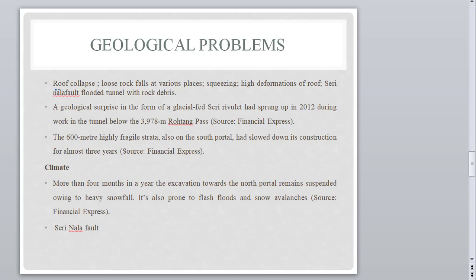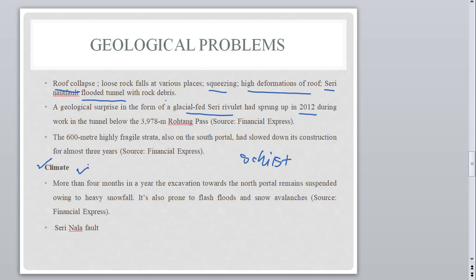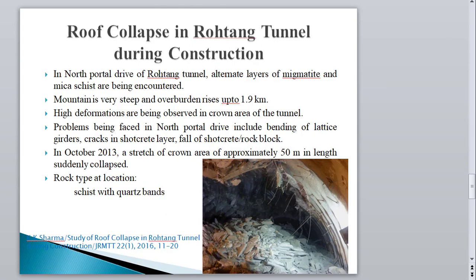The geological problems encountered were: roof collapse with loose rock falls, squeezing conditions, and high deformation of the roof. The Siri Nala flooded the tunnel with rock debris. A major geological surprise was the glacial flat at Siri Nala in 2012. Highly fragile strata in the form of schist with alternating quartz bands caused significant over-breaking problems. Additionally, climatic conditions due to heavy snowfall halted work every year for four months.